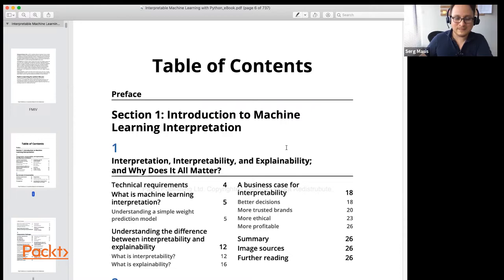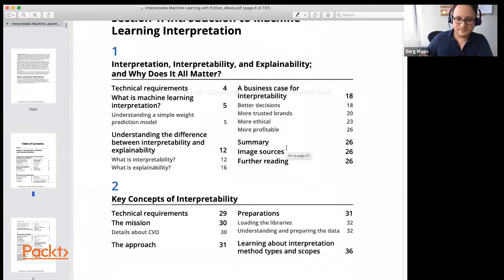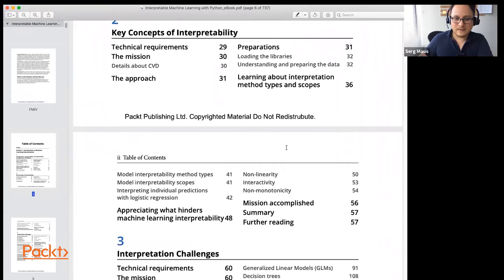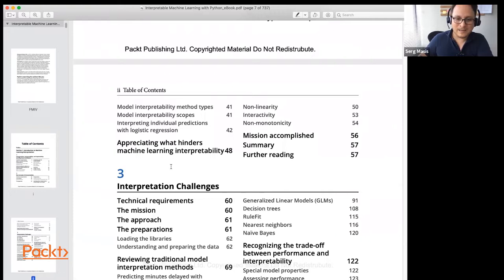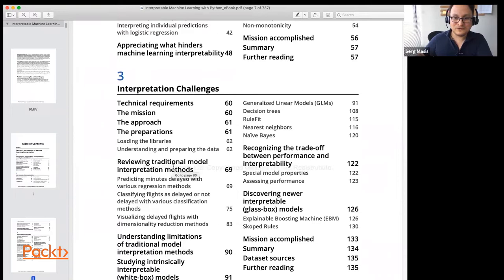and explainability, and it also explains why does it matter, what is the reason behind interpretation? Why is it so important? Then the key concepts of interpretability, which will be used throughout the book, and then interpretation challenges. What makes it so challenging, and why is it normally an afterthought in machine learning, and why it shouldn't be?